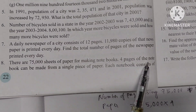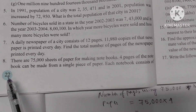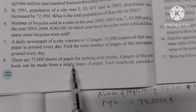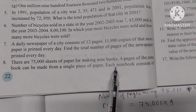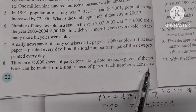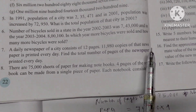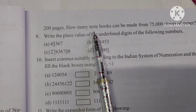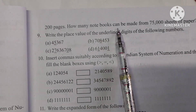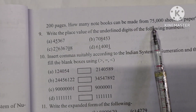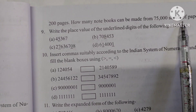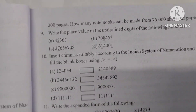Question 8: There are 75,000 sheets of paper for making notebooks. Four pages of a notebook can be made from a single piece of paper. Each notebook consists of 200 pages. How many notebooks can be made from 75,000 sheets of paper?